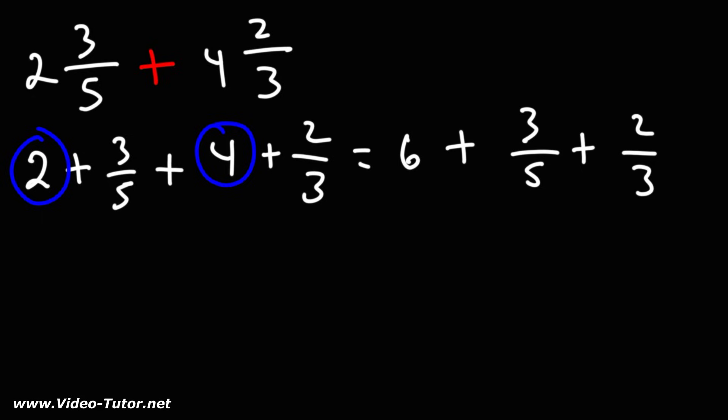Now we need to add the fractions 3 over 5 and 2 over 3. So we need to get common denominators. I'm going to multiply the second fraction using the denominator of the first and the first fraction using the denominator of the second.